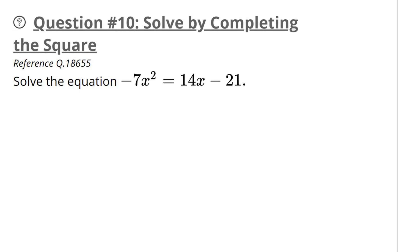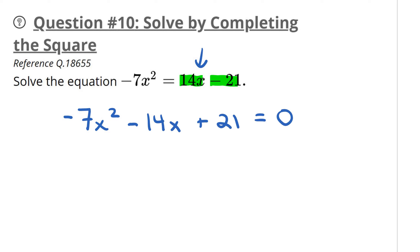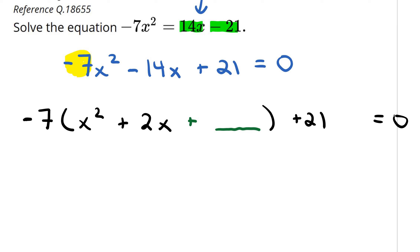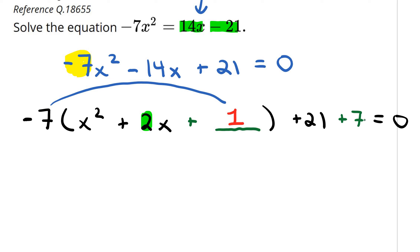Another completing the square problem — we just need to move things around. I have two terms on the right-hand side, so let's bring them over to the left: negative 7x squared. Since there's an x, bring that over too: negative 14x plus 21 equals zero. The leading coefficient is negative 7, so factor out negative 7 from the first two terms to get x squared plus 2x, then always a plus sign and a space, then plus 21 equals zero. The middle number is 2: divide by 2 to get 1, square it to get 1. Distribute with negative 7: negative 7 times 1 is negative 7, so the opposite is positive 7.